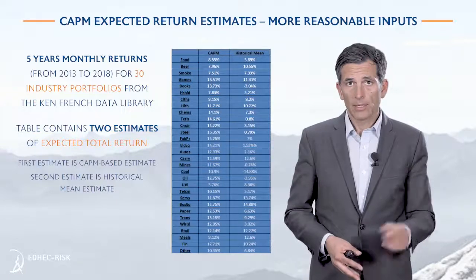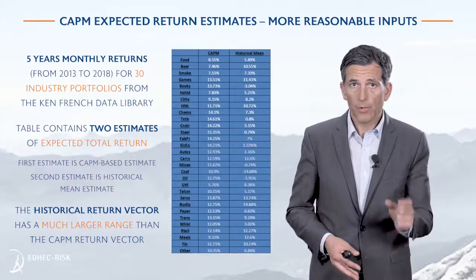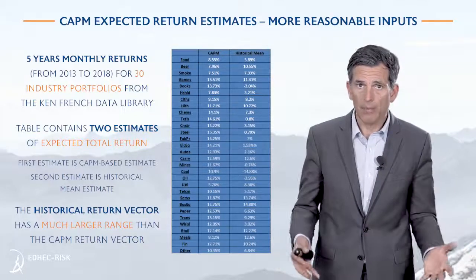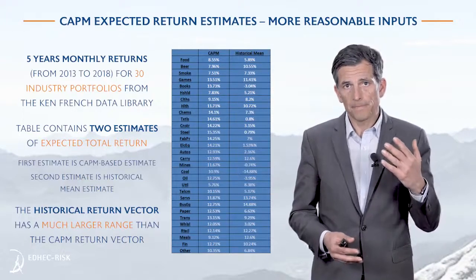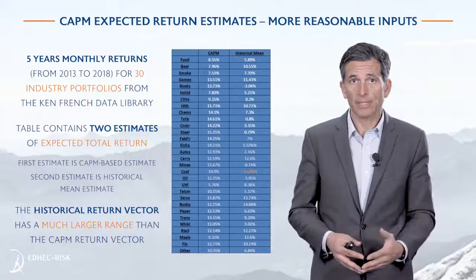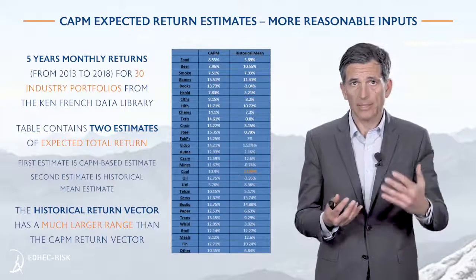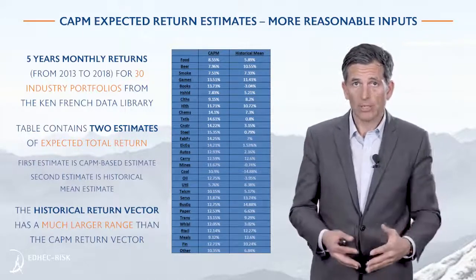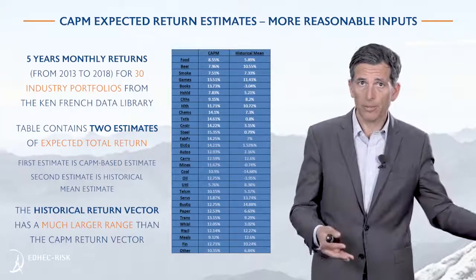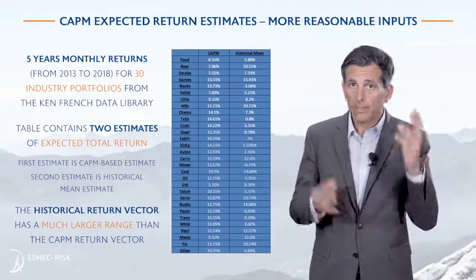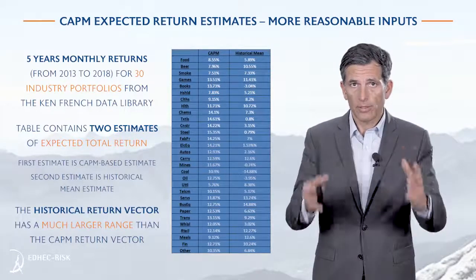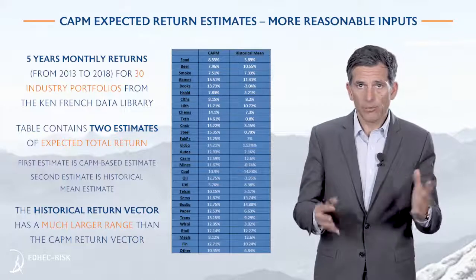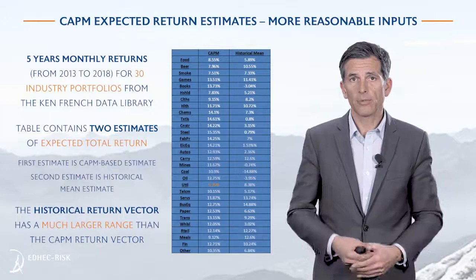Clearly, the CAPM-based expected return estimates are much more reasonable. The range of those estimates is much smaller compared to the range you get with the sample mean. With the sample mean, the lowest value is minus 14.88 percent, which does not make any sense as an expected return estimate. That figure just happens to be the realized return on a sector that did particularly poorly over the sample period — it does not imply that minus 15 percent would be a reasonable forward-looking estimate. In contrast, the CAPM-based minimum is around 5.76 percent — much more reasonable numbers.